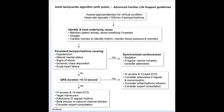If the answer is no to immediate instability, check whether QRS duration is more than 0.12 seconds. If yes, obtain IV access and a 12-lead ECG, consider adenosine if the rhythm is regular and monomorphic, consider antiarrhythmic infusion, and consider expert consultation.